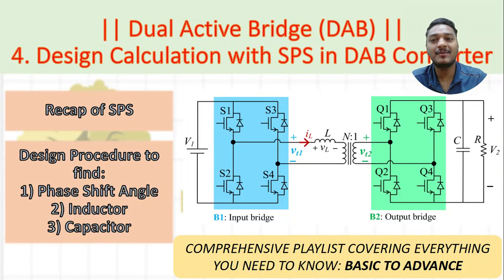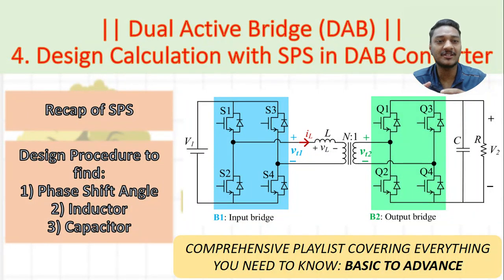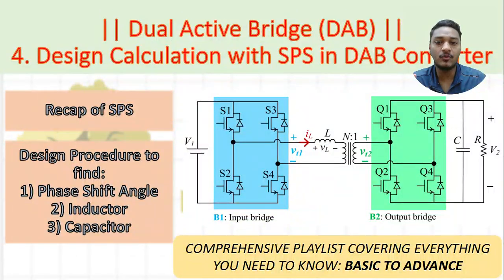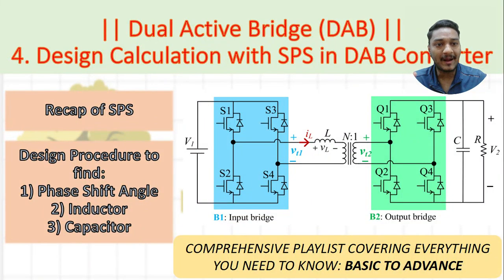This lecture is all about the design calculation with single phase shift in the DAB converter. We have previously discussed the DAB converter's working principle, how phase shift is provided between the two bridges, the single phase shift operation, how to derive its power formula, what current flows on the output side, and how maximum power flows in the DAB converter. In this video, we will jump to the MATLAB model, and for understanding that model we need to find out some particular parameters to do the simulations.